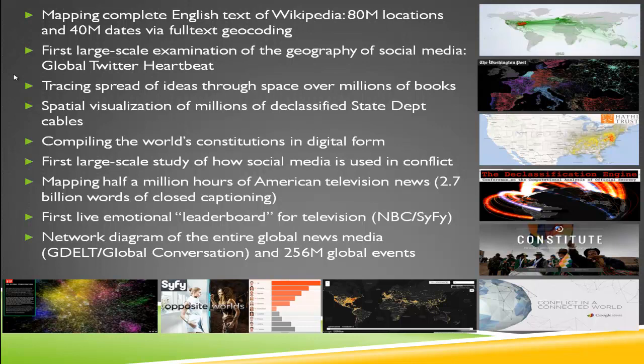Another project is a massive examination of how much geography we can recover from things like Twitter. Another project explores the spread of ideas through space over millions of books. There's also the collaboration with Matt at Columbia that Bob just described — how do you visualize millions of declassified State Department cables and extract a geography from them? For the Google Constitute project, we compiled the world's constitutions in digital form. We also mapped half a million hours of American television news, studied social media in conflict, and created a network diagram of all global news media worldwide.